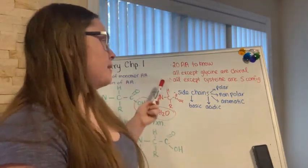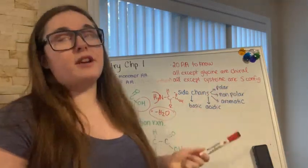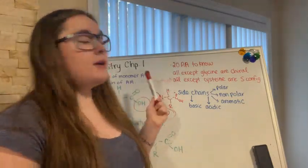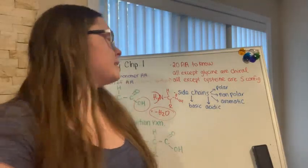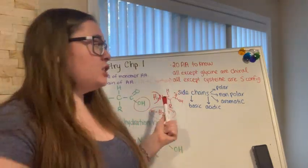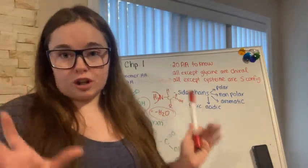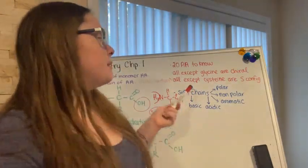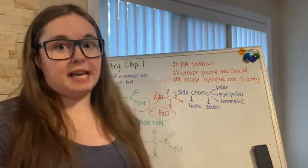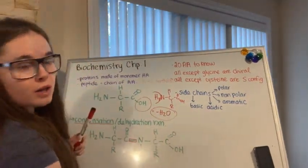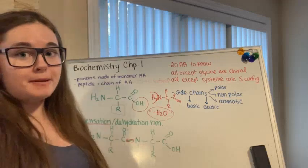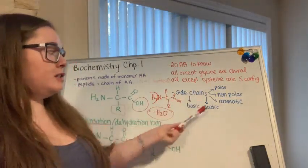All of our amino acids, except for cysteine, are in an S configuration. We will go into configuration in a later chapter, but it's important to note that all amino acids are S configuration except cysteine. Next we're going to talk about the side chains — we'll be grouping the 20 amino acids into polar, non-polar, aromatic, acidic, or basic side chains. The R group is what gives each amino acid its specific properties.